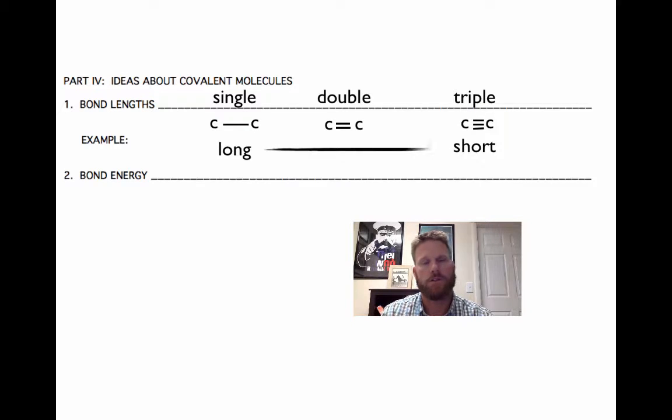Then we can also see that there's an inverse relationship between the length of a bond and the energy of a bond. A triple bond requires a lot of energy to form, and it also releases a lot of energy when it is broken. So the triple bonds are the strongest bonds, and the single bonds are the weakest bonds.